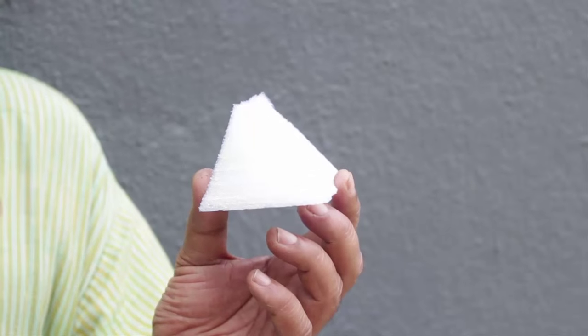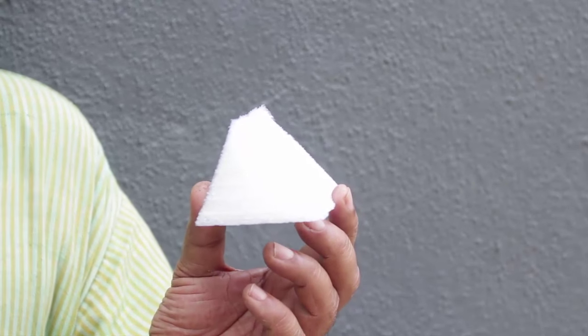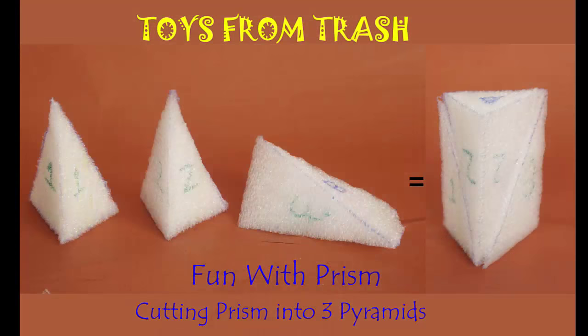This is a triangular prism and today we are going to cut this into three equal triangular pyramids, thereby showing that the volume of a pyramid is 1/3 times that of a prism.